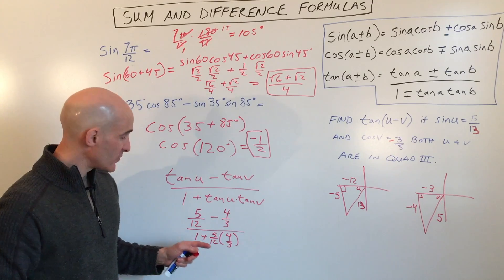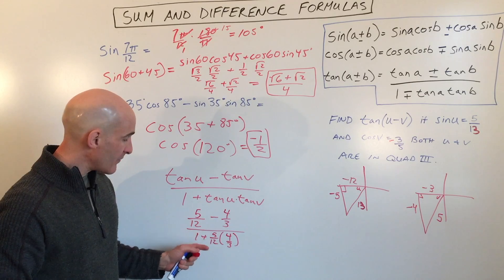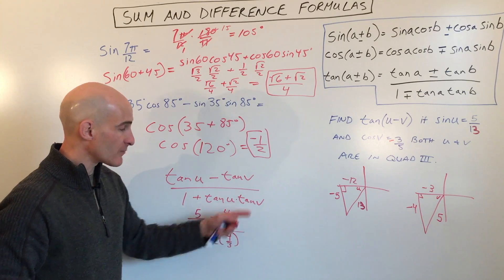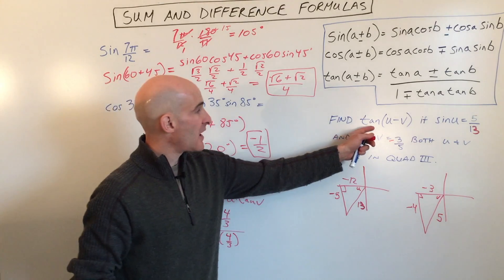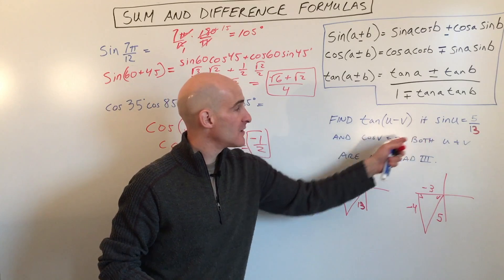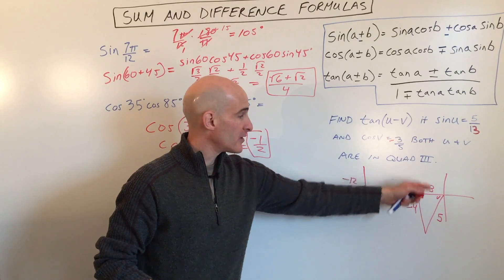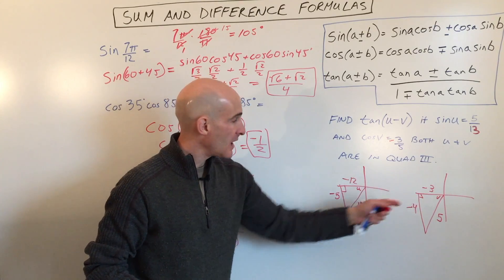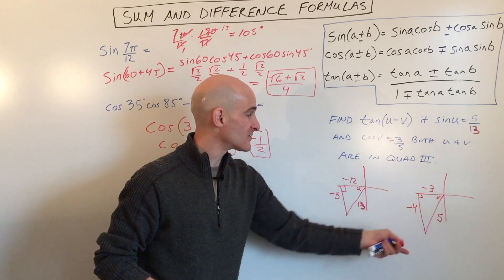Now all you have to do is just do some arithmetic and simplify this complex fraction. Get common denominators, get common denominators, and then dividing is like multiplying by the reciprocal, and you can simplify this down. So this is how to find tangent of u minus v. When they give you two angles, just draw those in the quadrant that they're saying that they're in, and solve for the missing side, that's the key, and then pay attention. If you're going left, it's negative, right is positive, up is positive, and down is negative.